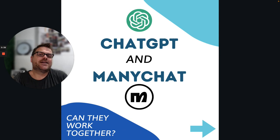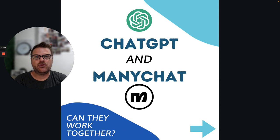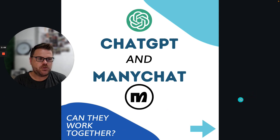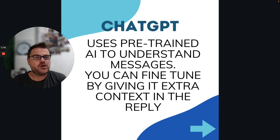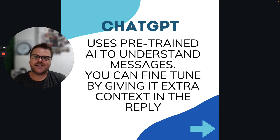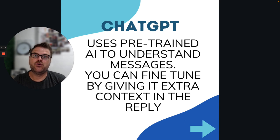Great questions. Let's cover off how they can be used together, if they can be used together, and potentially some other solutions you may be looking at if you want to go down this path. When we're looking at ChatGPT, if you haven't used it yet, you should start. As we know, it uses pre-trained AI to understand messages. You can put a lot of information in those messages, give it a lot more context and guidance on how to reply, and then you can fine-tune it — chat with it back and forwards to improve the replies that it gives.